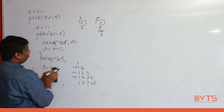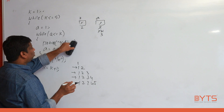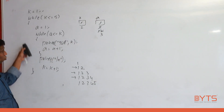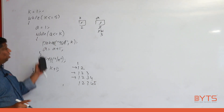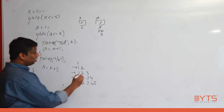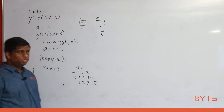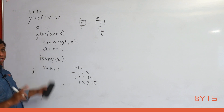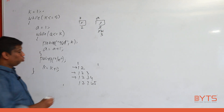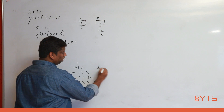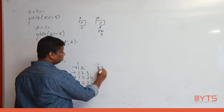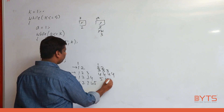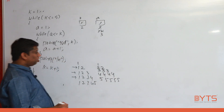Now instead of printing a, what if we print k? The loop still repeats k times. First time k = 1: prints 1. Second time k = 2: prints 2, 2. Third time k = 3: prints 3, 3, 3. Fourth time k = 4: prints 4, 4, 4, 4. Fifth time k = 5: prints 5, 5, 5, 5, 5. The shape is the same but the printed value changes.